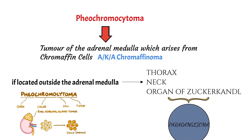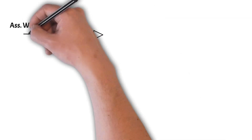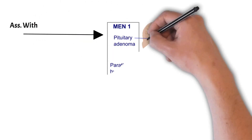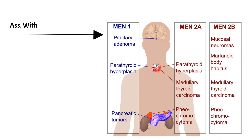This tumor is associated with paraneoplastic syndromes such as MEN1, MEN2A, and MEN2B. In MEN1 there is pituitary adenomas, parathyroid hyperplasia, and pancreatic tumors. In MEN2A there is parathyroid hyperplasia, medullary thyroid carcinoma, and pheochromocytoma. In MEN2B there is medullary thyroid carcinoma and pheochromocytoma.